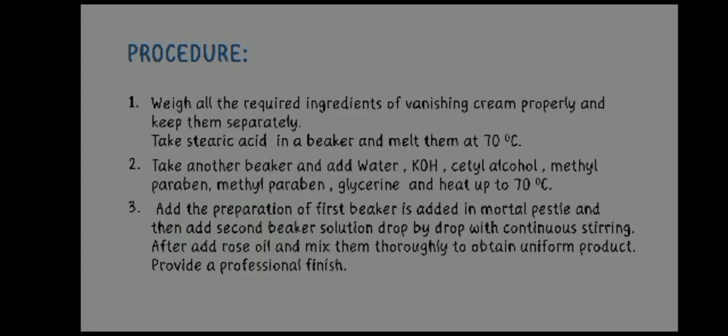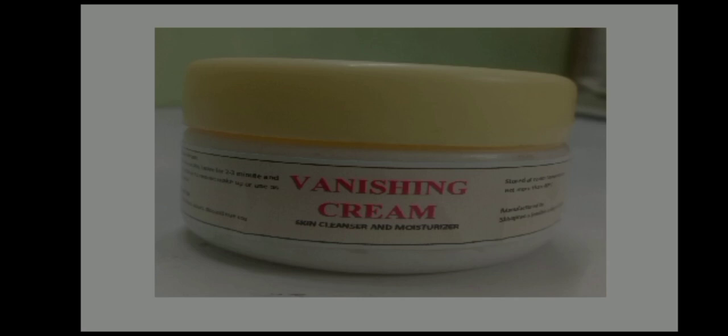Procedure: First, weigh all required ingredients of vanishing cream properly and keep them separately. Take stearic acid in a beaker and melt it at 70°C. Second, take another beaker and add water, KOH, cetyl alcohol, methylparaben, glycerin, and propylparaben, and heat up to 70°C. Third, add the preparation from the first beaker into a mortar and pestle, then add the second beaker solution drop by drop with continuous stirring. After that, add rose water and mix thoroughly to obtain a uniform product. Transfer the vanishing cream into a container and label it properly.